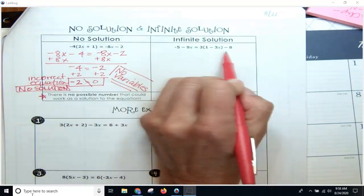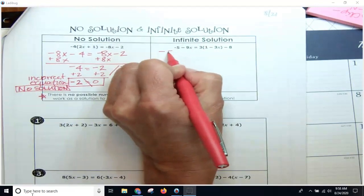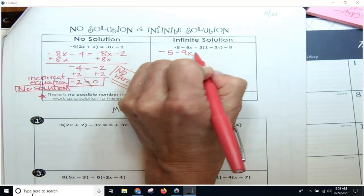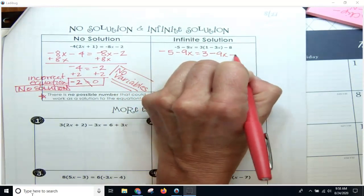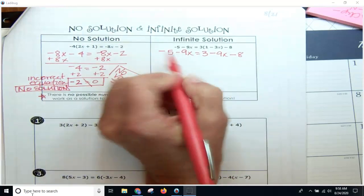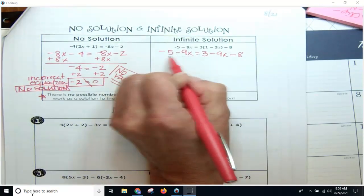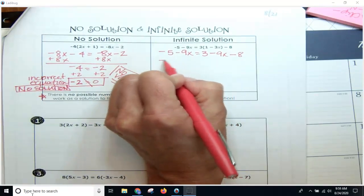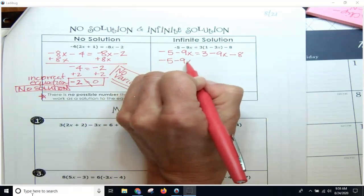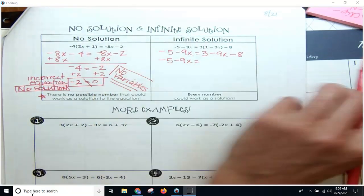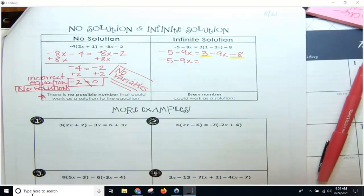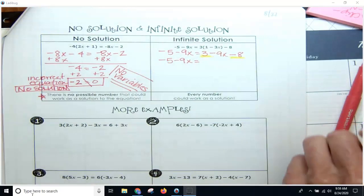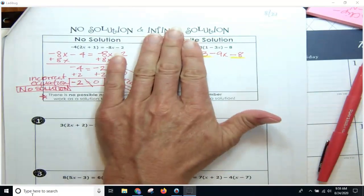All right, now let's see what it looks like when you have infinite solutions. So if I work this out, negative 5 minus 9x equals 3 minus 9x minus 8. There is nothing to simplify on this side. I've got negative 5 minus 9x equals—except for here, I've got some common terms that need to be simplified before I move on.